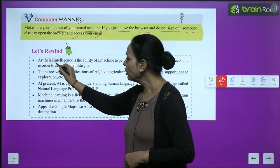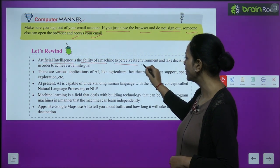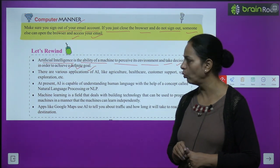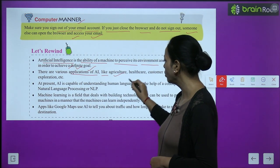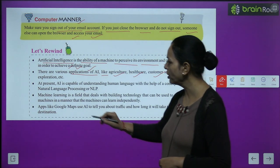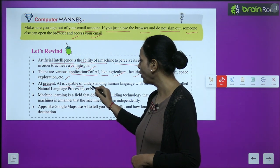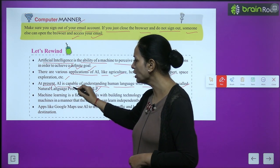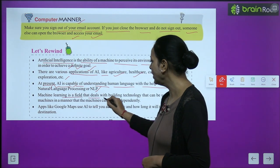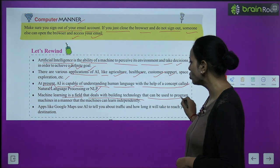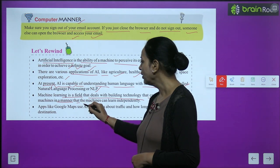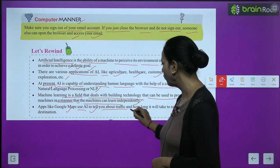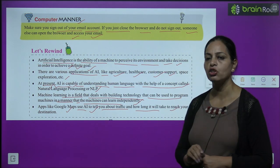Let us rewind. Artificial intelligence is the ability of a machine to perceive its environment and take decisions in order to achieve a definite goal. There are various applications of AI like agriculture, healthcare, customer support, space exploration, etc. AI is capable of understanding human language with the help of NLP. Machine learning is a field that deals with building technology so that machines can learn independently. Apps like Google Maps use AI to tell you about traffic and how long it will take to reach your destination.